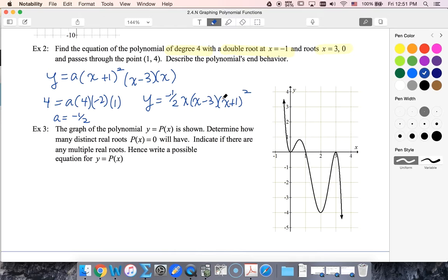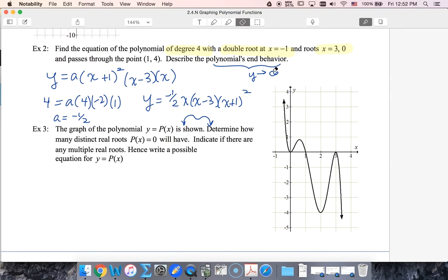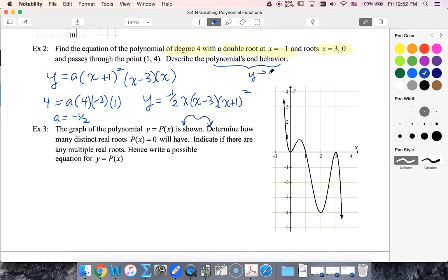Describe the end behavior. Well, this has a total of x to the fourth. Since my a value is negative, my graph is going to look something like this. So I could say that the end behavior is that y goes to negative infinity as x goes to plus or minus infinity. So I start and end pointing down.